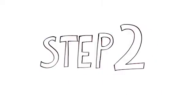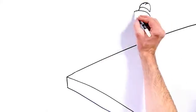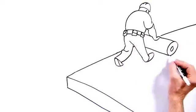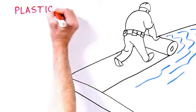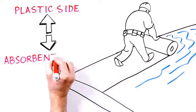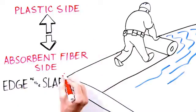Step 2. Place the UltraCure wet curing blanket on the wet surface, plastic side up, absorbent fiber side down. Align it with the edge of the slab.